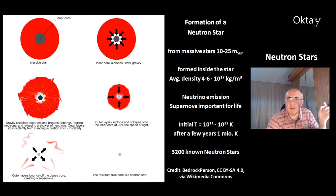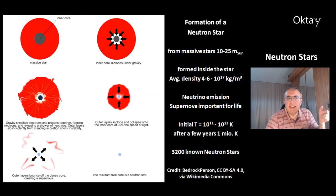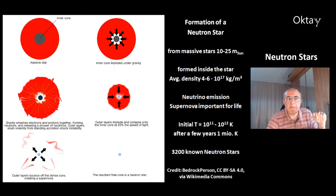The average density of a neutron star is 4 to 6 times 10 to the 17 kilograms per cubic meter. The initial temperature is 10 to the 12 Kelvin. After a few million years it cools quickly down to 1 million Kelvin. There are about 3,200 known neutron stars.